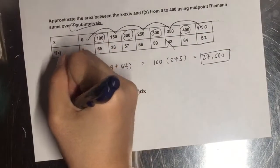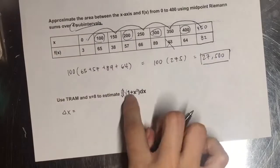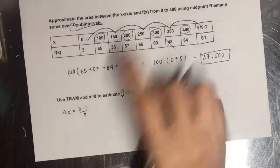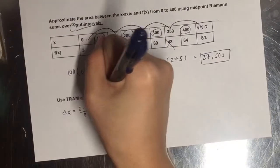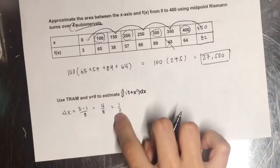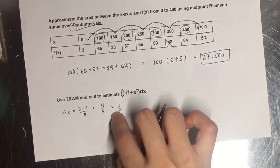For TRAM, the first thing we got to do is find our base. So we're going to put b minus a over x, which is 5 minus 1 over 8, which simplifies to 4 over 8, which is 1 half. And that's our base.